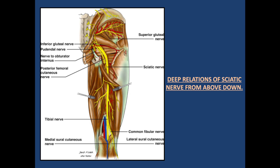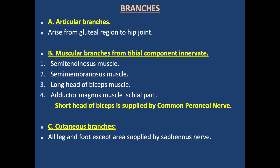This diagram shows the deep relationship of the sciatic nerve from above. It comes out from the piriformis muscle, then there is the superior gemellus, obturator internus muscle, inferior gemellus muscle, quadratus femoris muscle, and in its length the adductor magnus muscle. The long head of biceps can also be seen in this diagram. This is followed by a diagram showing muscular innervation of the posterior thigh and leg by the tibial nerve.